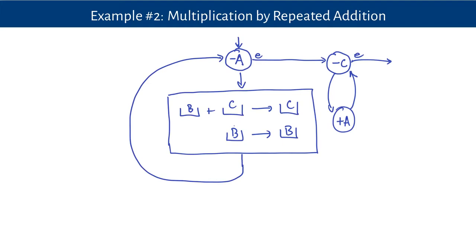This whole program computes multiplication by going through the central process of addition as many times as there are marbles in register A — it does addition of B, A times. It goes through that loop however many marbles are in register A, and once register A is counted down, it finishes the central loop. Then it puts the result from register C back into register A via another loop, and finishes when C is empty and all the units are back in register A.